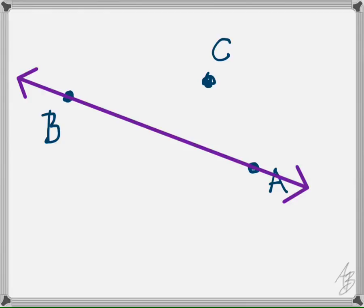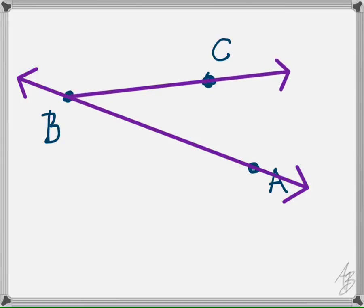Next is ray BC. B is the endpoint, so we need to draw it so the line stops or starts at B and then goes all the way through C. Since it's ray BC, we know it starts at B and then goes from there through point C.